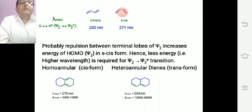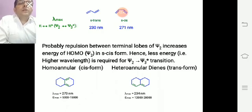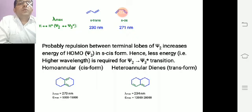For 1,3-butadiene, one isomer is trans and one is cis. Trans is recorded at 230 nm while cis is recorded at 270 nm. For the π→π* transition, repulsion between terminal lobes of ψ₂ increases the energy of HOMO ψ₂ in the cis form. Hence, less energy — that is, higher wavelength — is required for the ψ₂ to ψ₃ transition. For homoannular (cis) diene, λ_max is 273 nm, while for heteroannular (trans) diene, λ_max is 234 nm.